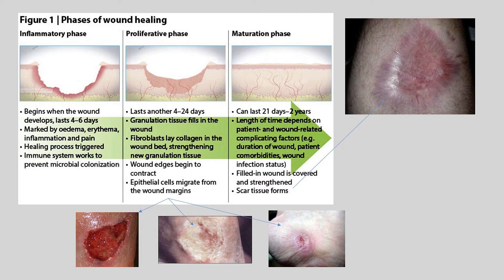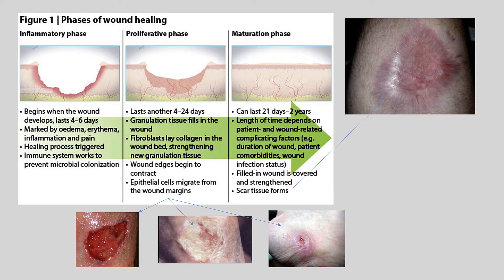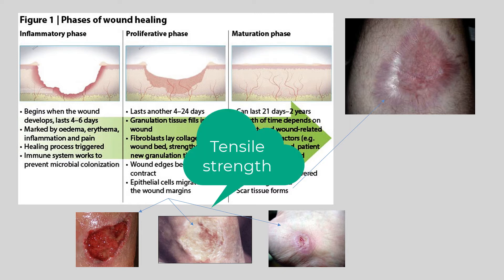The second part of the proliferative phase is re-epithelialization. After new blood vessels form, epithelial cells migrate from the basal layer of the dermis across the wound edges — roughly three to seven days into the healing process. Fibroblasts appear and synthesize and secrete collagen, which begins to increase the strength of the wound bed over the next three to six weeks. Collagen is a sticky material that essentially glues cells together, creating a mesh network that provides the new tissue tensile strength.